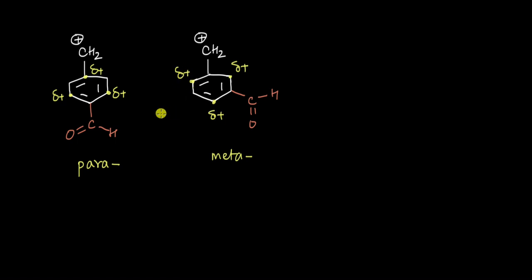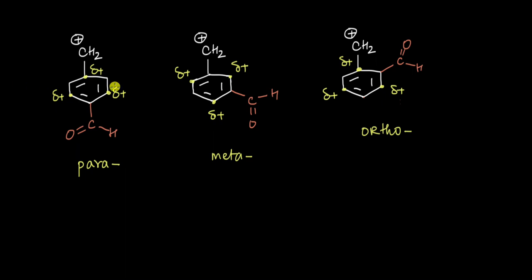As you notice, the positive charges got developed at specific positions on the ring. If you look closely, you'll realize that with respect to this electron withdrawing group, these positive charges get developed at the ortho and para positions of the electron withdrawing group. Similarly, drawing all resonating structures confirms that the positive charges get developed at the ortho and para positions relative to this electron withdrawing group.